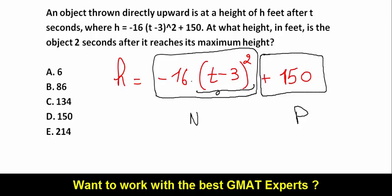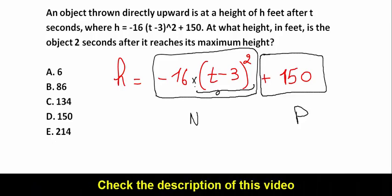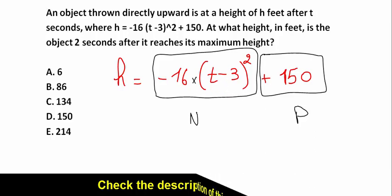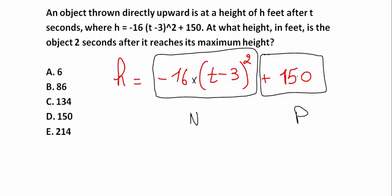Now it is multiplied by minus 16. So it's minus 16 times this number. A negative number multiplied by a positive number is definitely negative. So this component is negative and this component is positive.